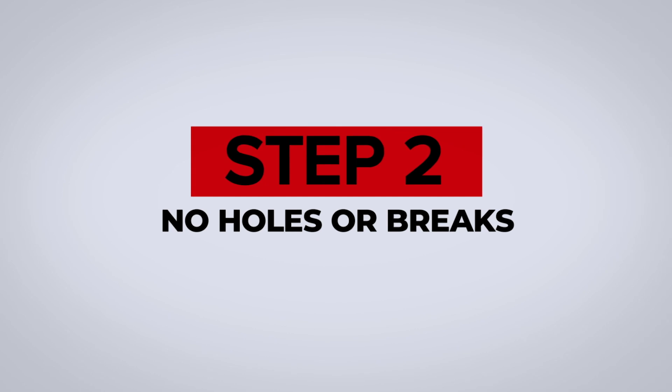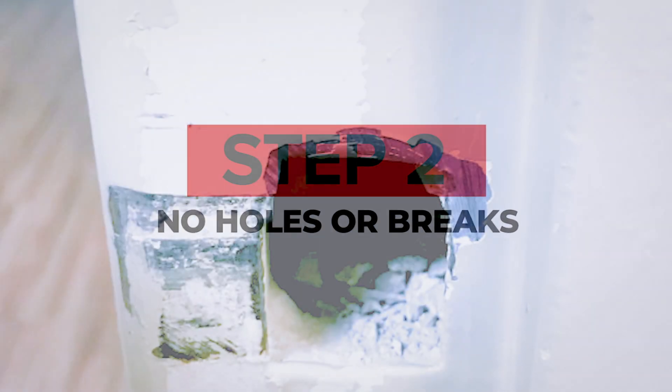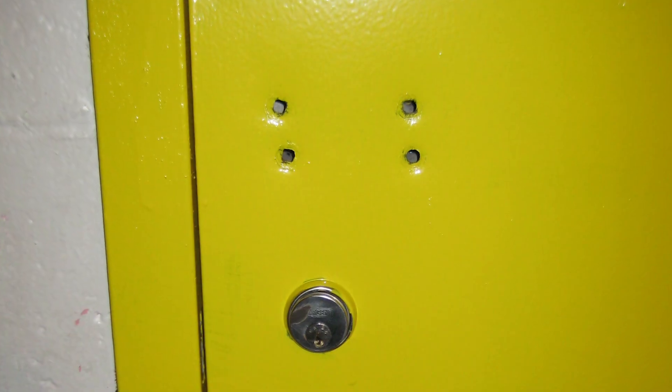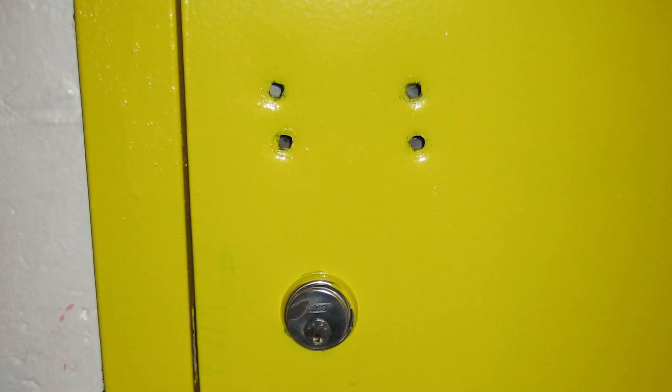Number 2: No holes or breaks in the door or frame. NFPA 80 addresses the acceptable means for filling fastener holes. Other holes must be treated as a field modification as outlined in the standard.